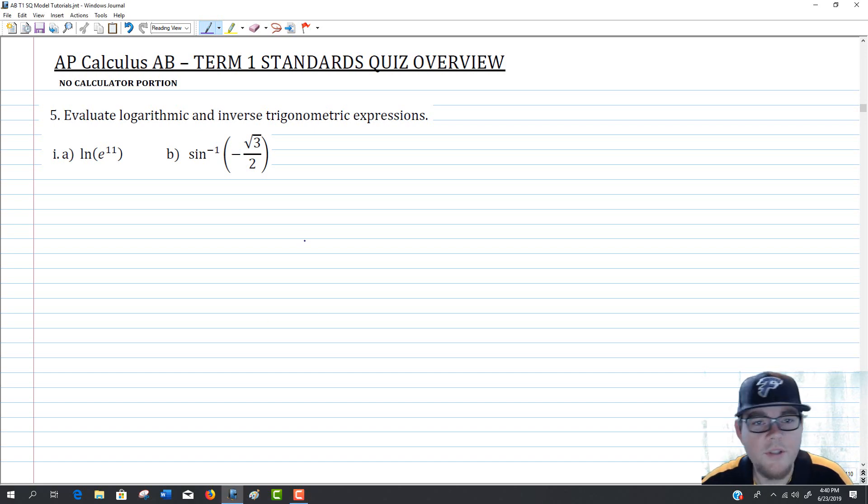Okay, hello. We're here to continue working through the standard quiz model for the 2019 AP Calculus AB Term 1 Standards Quiz. We're going to be attacking the fifth question right here, which asks you to do two different things in the same basic ballpark. I ask you to evaluate some common function types, some common expressions that you might not necessarily run into all that often otherwise. In particular, each time we're going to ask you to evaluate one log equation or one log expression and one inverse trig expression.